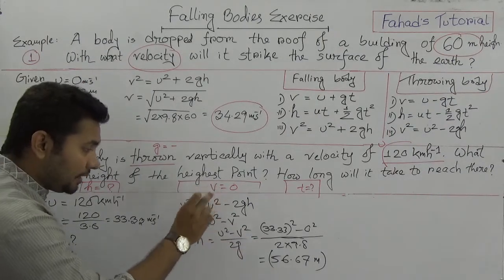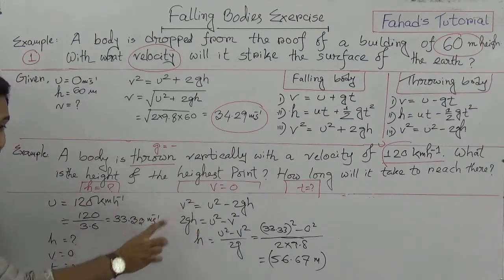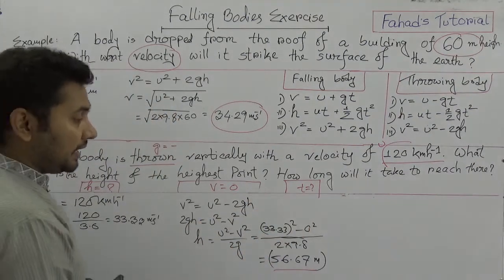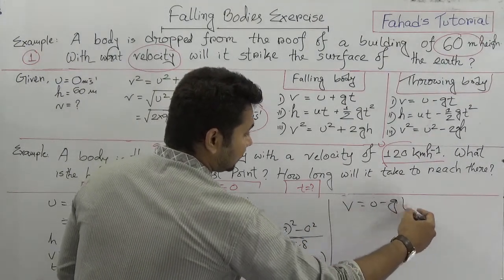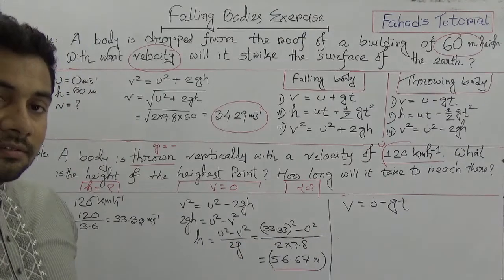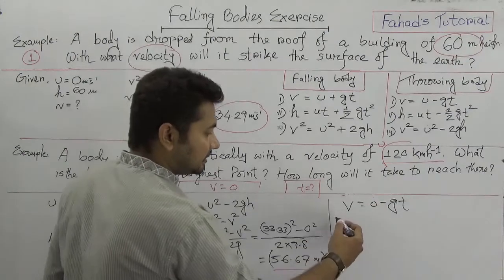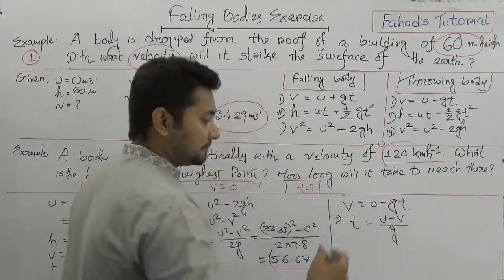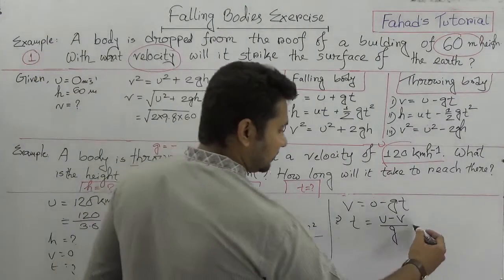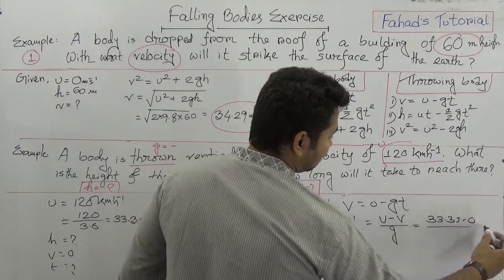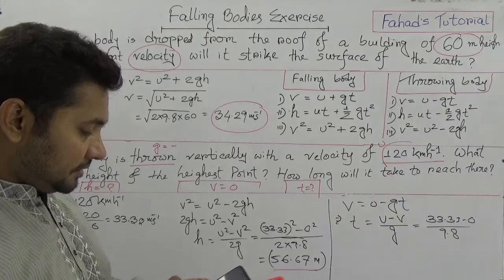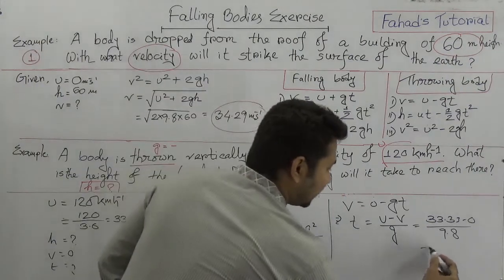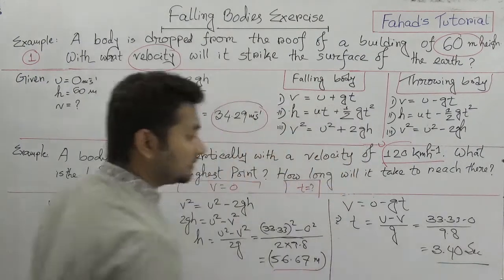Now we know H = 56.67 m, and T is still asked. We use V = U − GT for throwing bodies, since G is negative. Rearranging: T = (U − V) / G = (33.33 − 0) / 9.8 = 33.33 / 9.8 = 3.40 seconds. So the time to reach the highest point is 3.40 seconds.